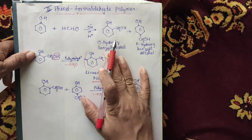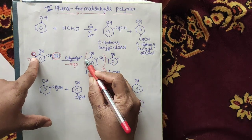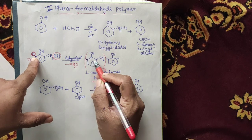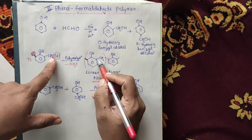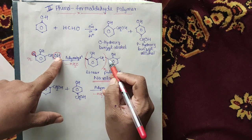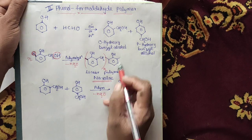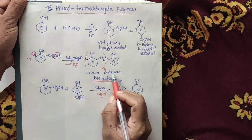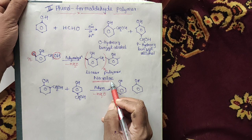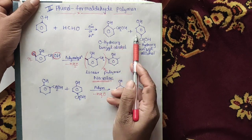One H is removed, forming a linkage, and the CH2-OH group connects with the other molecule. This continues along the chain, forming a linear chain polymer which is called Novolac.